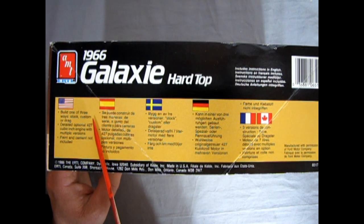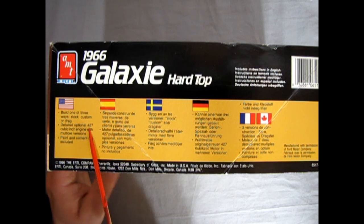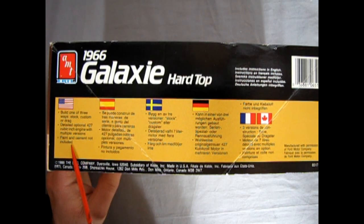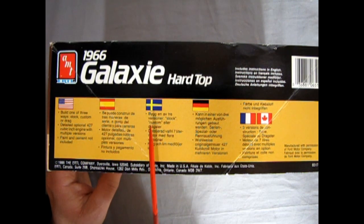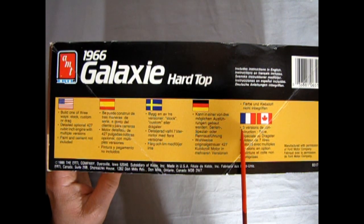So it says, build one of three ways, stock custom or drag, detailed optional 427, told you guys. Cubic inch engine with multiple versions, paint and cement not included. And then you get Spanish, Swedish, German, and French Canadian.